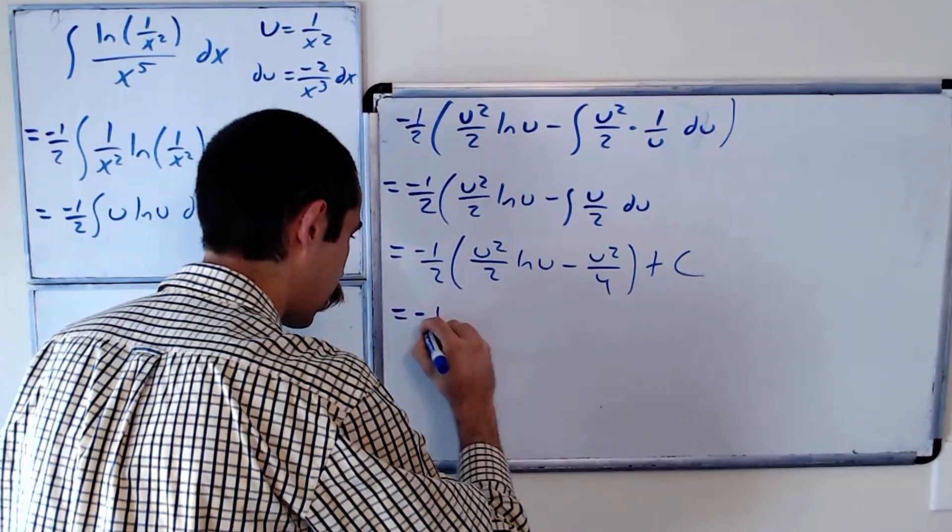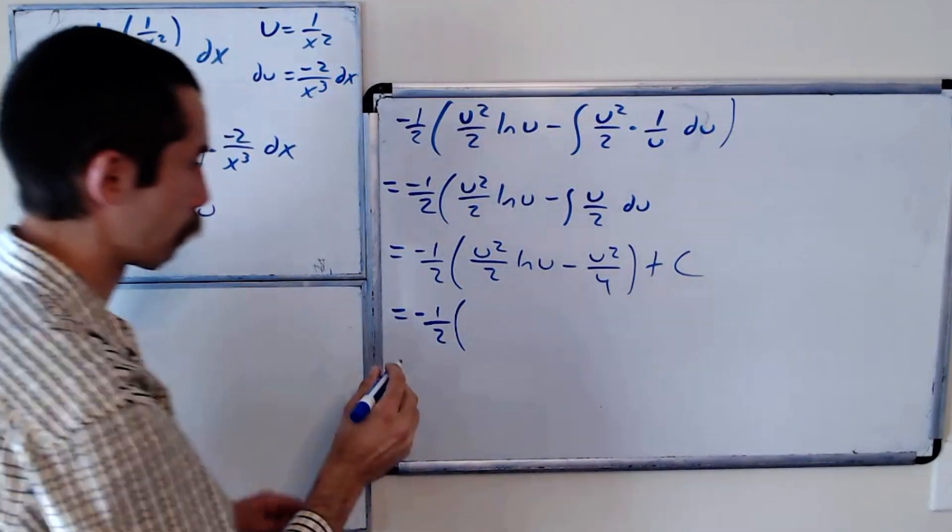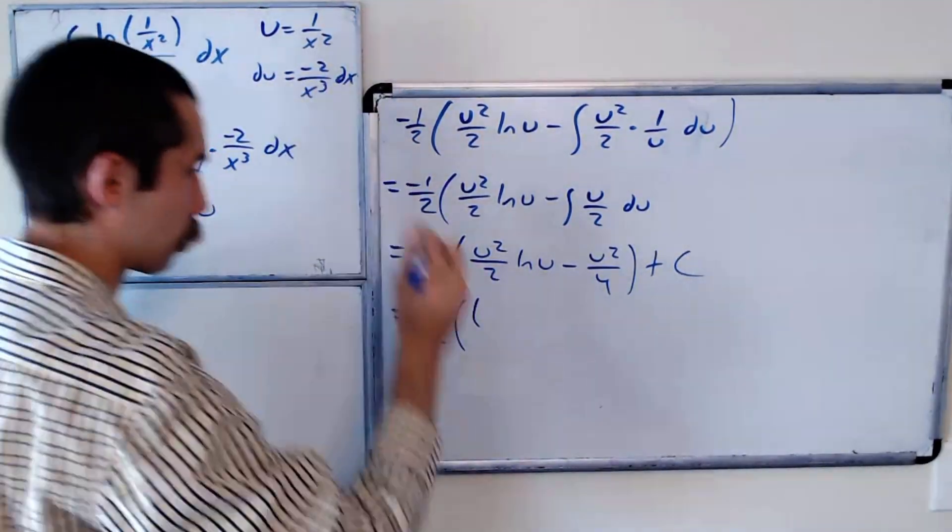So we had negative 1 half. What was x? 1 over x squared.